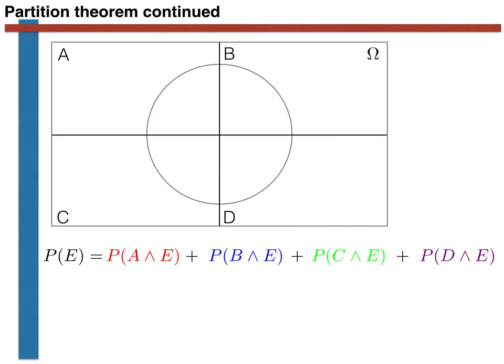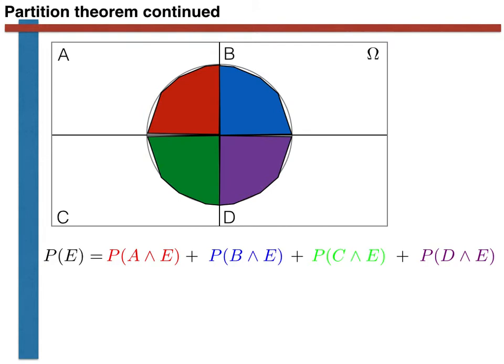Now the important thing to notice here is that we have coloured the whole area for P of E. We have thus proved pictorially that the probability of event E can be calculated using the sum shown here. Notice that one reason this works is that there is no overlap between the areas of E and A, E and B, E and C and E and D subsets.